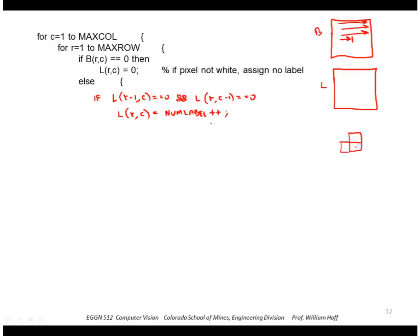If instead, let's say I have a label above me, so there's a one, there's a component above me, but not to the left. So in other words, the pixel above me is not 0, but the pixel to the left of me is 0. So I've visited both of those, and I know that the one above me has already been labeled. So I'm connected to that one, so I should use the label of the one above me.